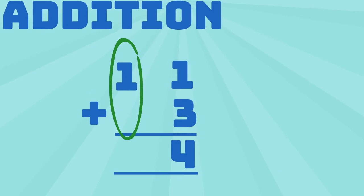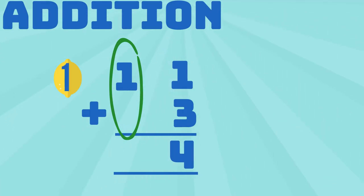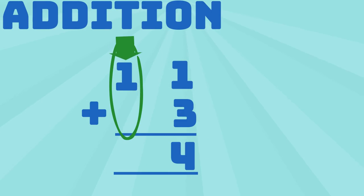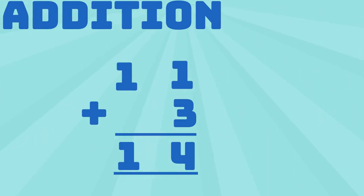Let's now calculate 1 plus 0. 1 lemon plus 0 equals 1. That means 1 plus 0 equals 1. Therefore, 11 plus 3 equals 14.